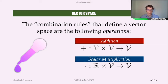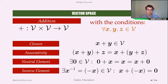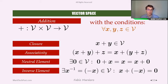Vector spaces with those two operations have some constraints, some conditions. For the addition operation, we define four conditions that must be satisfied: closure, associativity, neutral element, and inverse element. Closure means that if we take two vectors in the vector space, the result of the addition operation must stay in the vector space — the operation is closed because every combined element returns another element in the vector space.